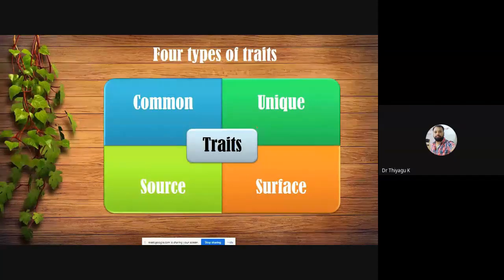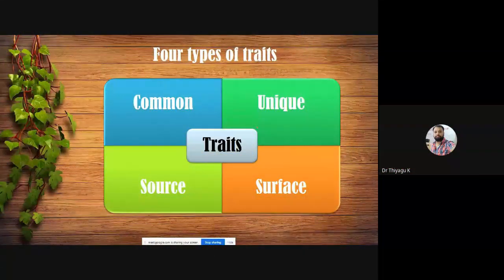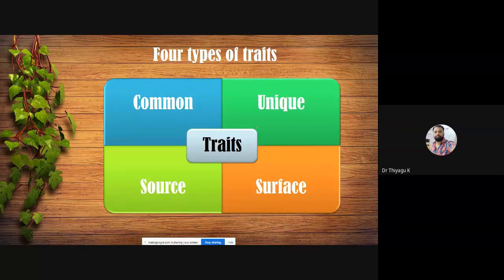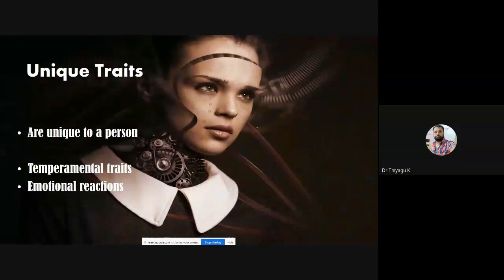The 16 personality factors can also be divided into four types of traits. Common traits are characteristics found widely distributed among most people — such as honesty, agreeableness, and cooperation. Unique traits are characteristics specific to a particular individual — not common to everyone, only that person has some kind of unique difference. These unique differences are categorized as unique traits.